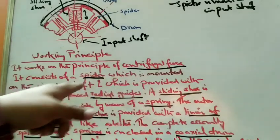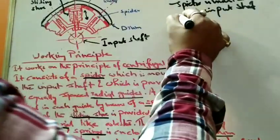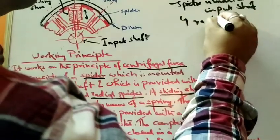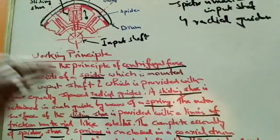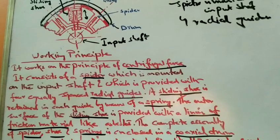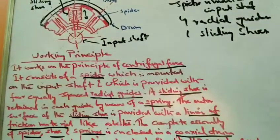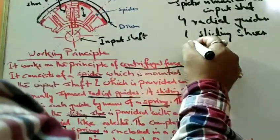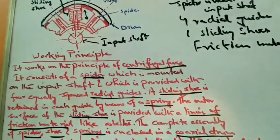The spider is provided with four equally spaced radial glides. A sliding shoe is retained in each glide — one sliding shoe per radial glide. The outer surface of the sliding shoe is provided with a lining of friction material.